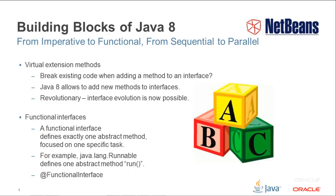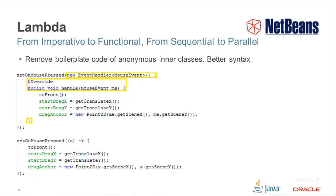Secondly, the notion of functional interfaces has been introduced. These have actually always existed, but have been particularly cumbersome to code in Java. An interface such as Runnable, with a single abstract method, run, should be far simpler to work with than has been the case in Java, and forms the focus of the lambda enhancements in Java 8. A new annotation has been introduced — @FunctionalInterface — which, like the @Override annotation, is used to declare the intention of an interface to be functional, and hence exposed to the new lambda syntax.